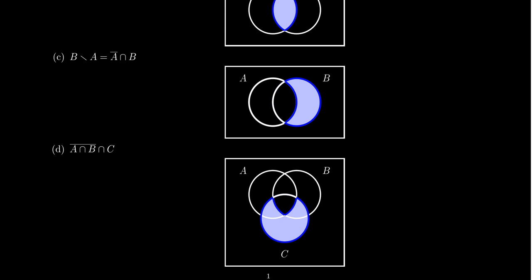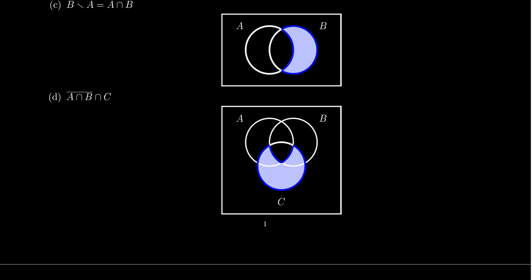It's also very common to talk about Venn diagrams with three sets, in which case you would illustrate that by three overlapping circles. One for set A, one for set B, one for set C, like so.